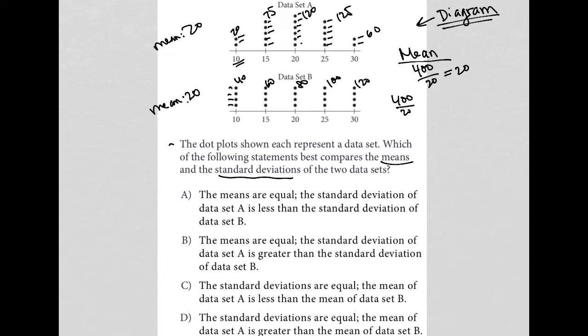So looking at the answer choices, it looks like choice A and B both say the means are equal. So that's definitely true. And then for C and D, the mean, it doesn't say they're equal. So C and D are gone.